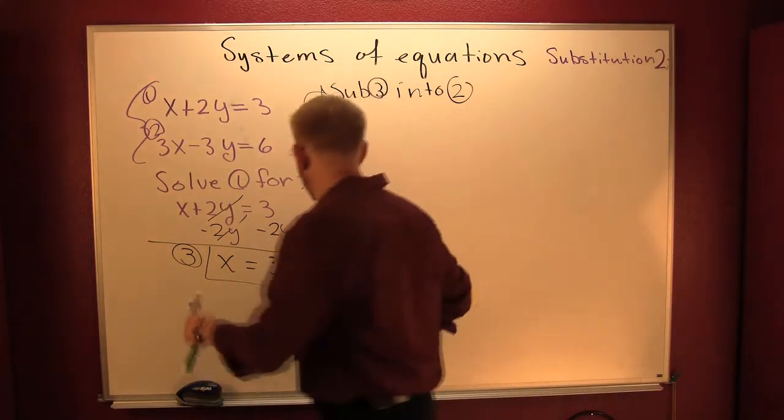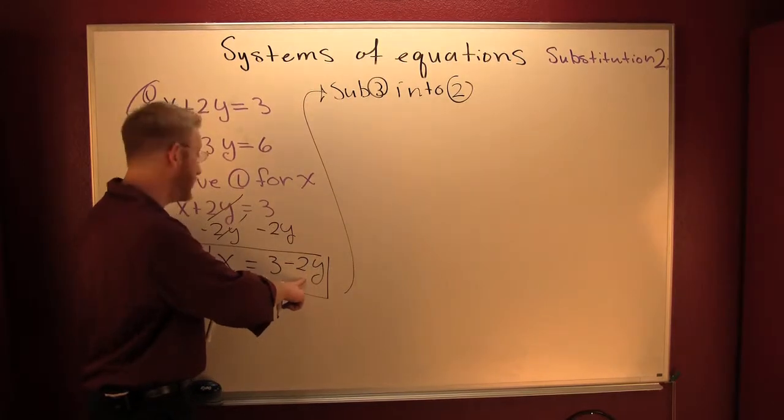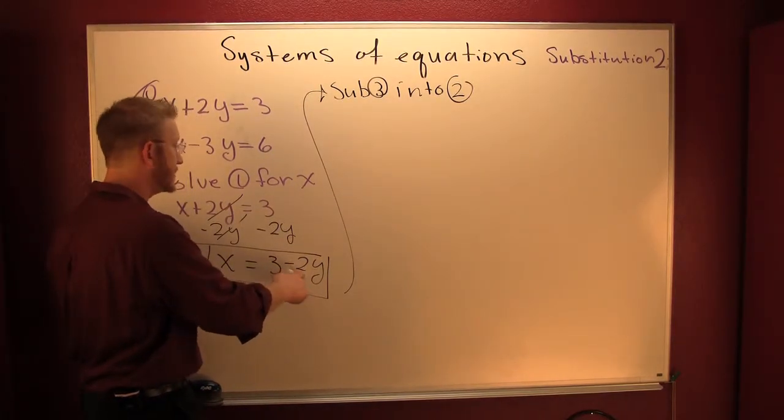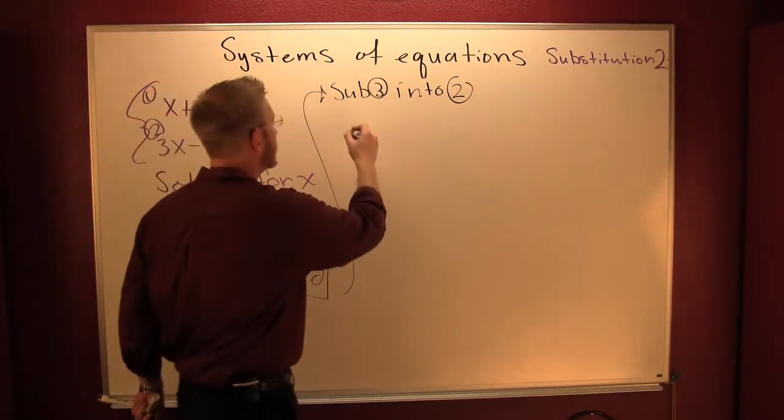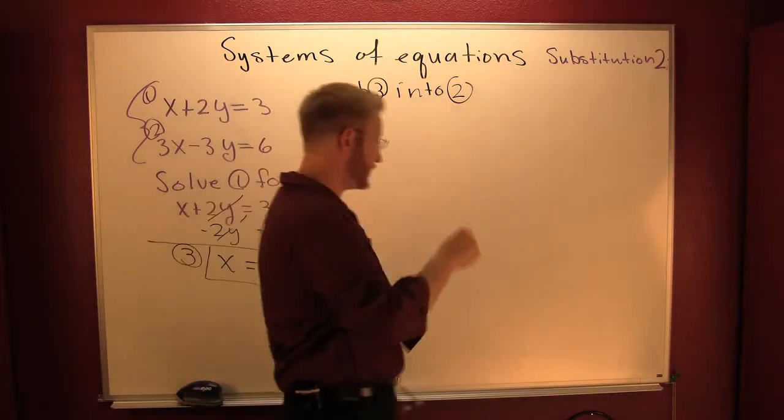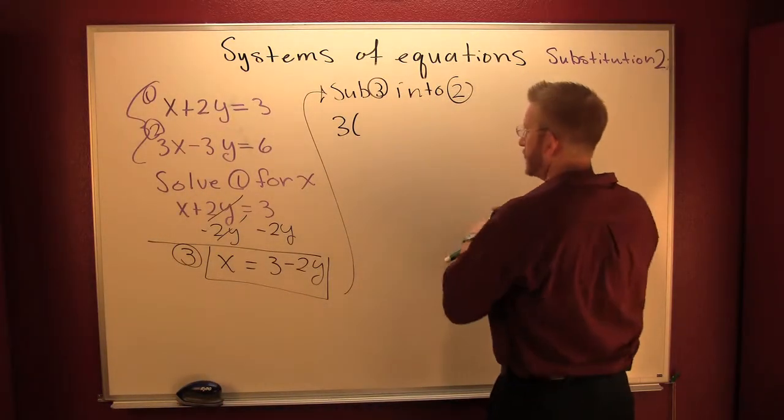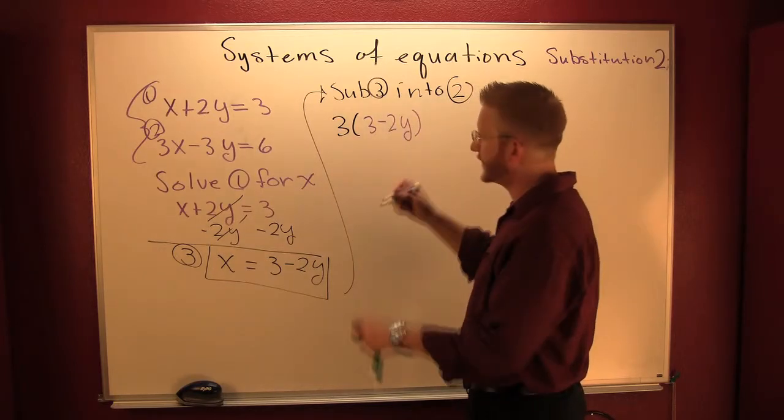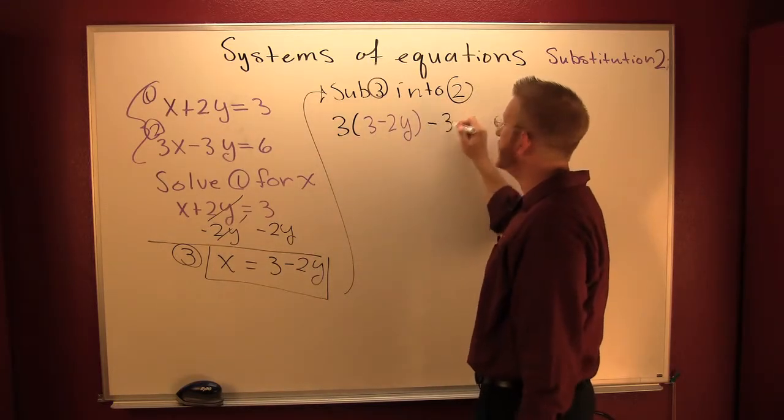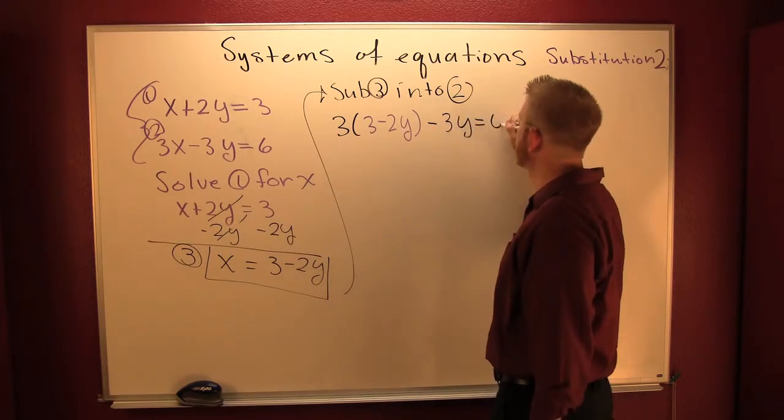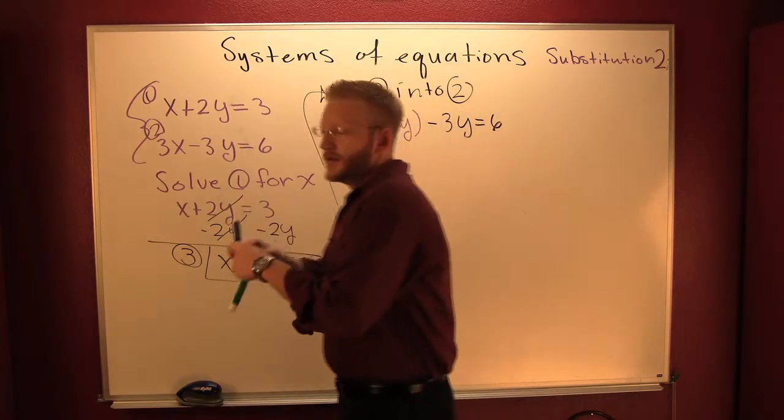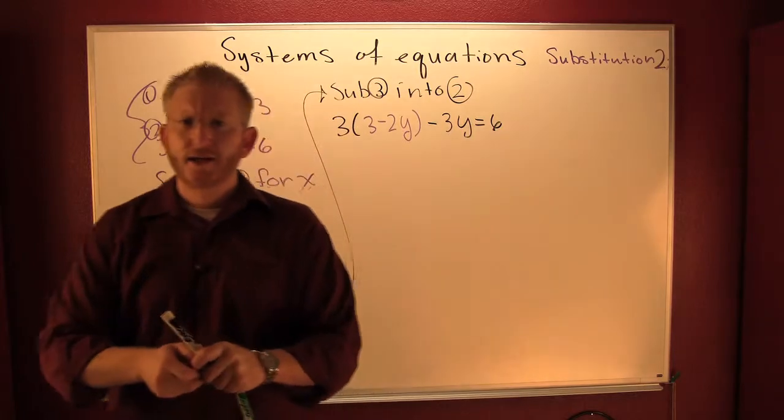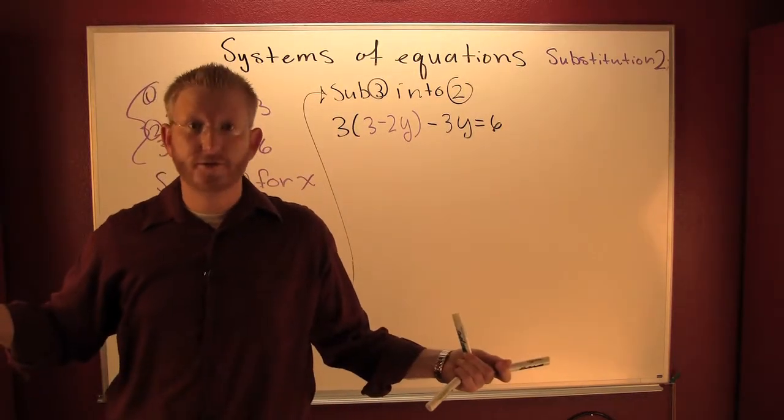So everywhere I see an X in two I'm gonna put a three minus two Y. So here we go. This is three times three minus two Y minus three Y is six. Very nice. Clean it up.